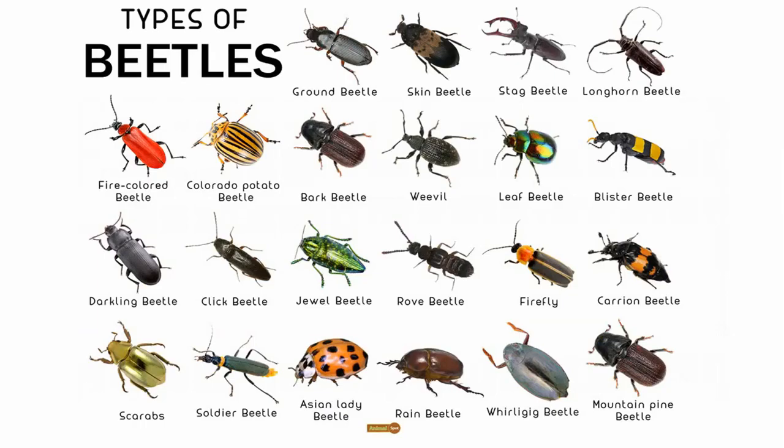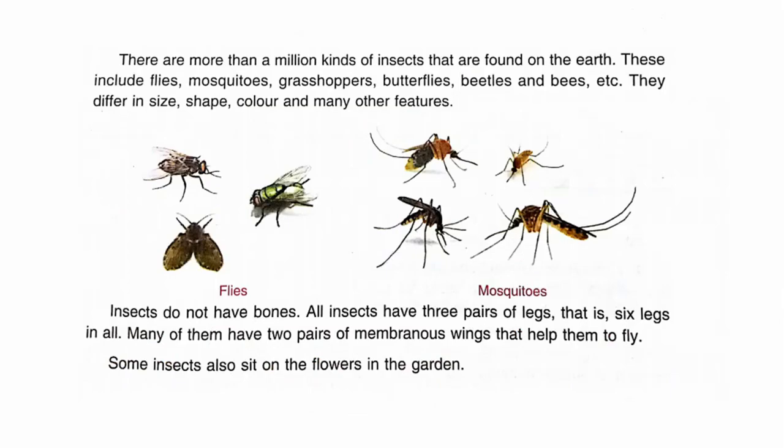You can see here pictures of different types of insects. There are more than one million kinds of insects found on the earth.